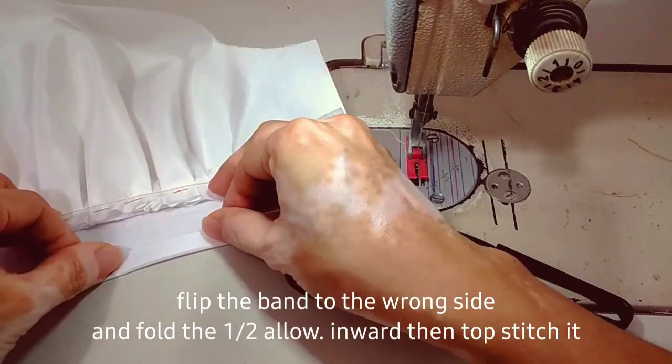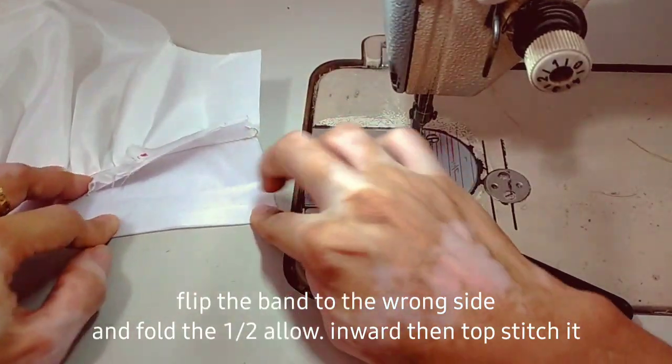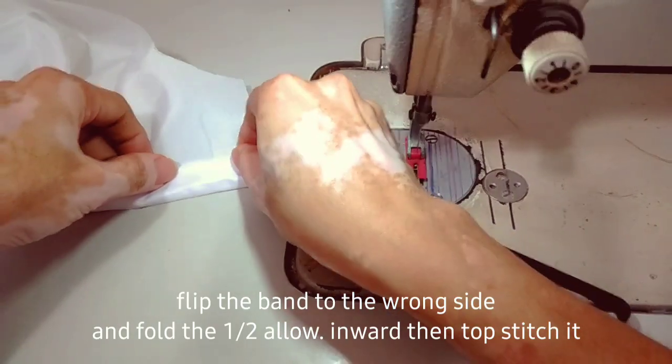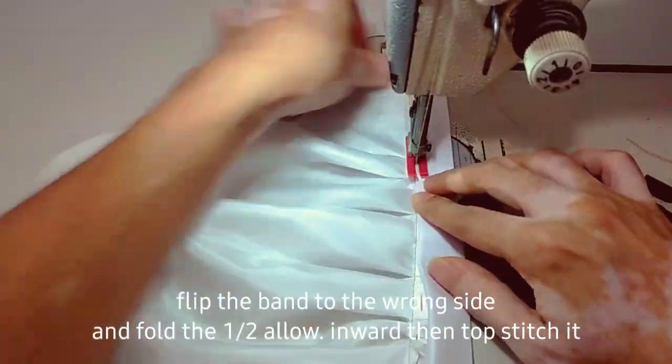Then flip lang natin yung band sa wrong side and then fold in the 1.5 allowance inward, then top stitch lang natin sya.